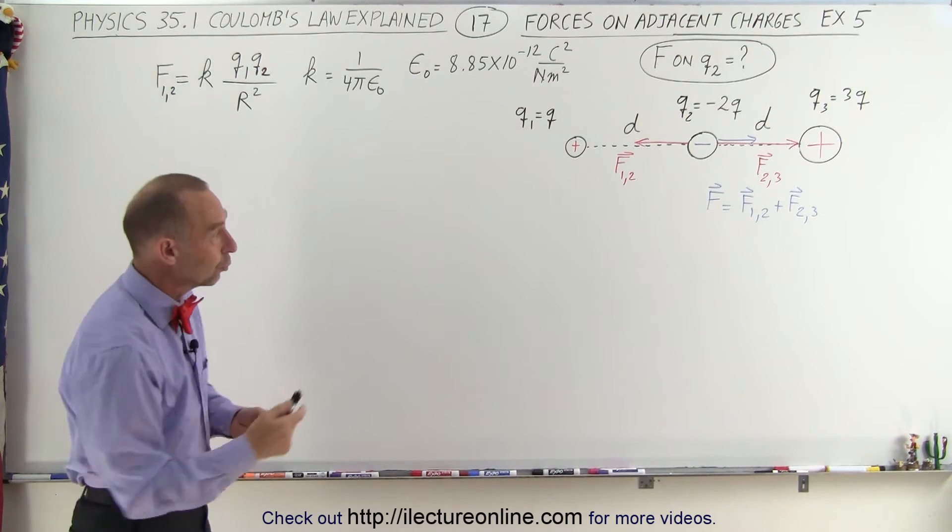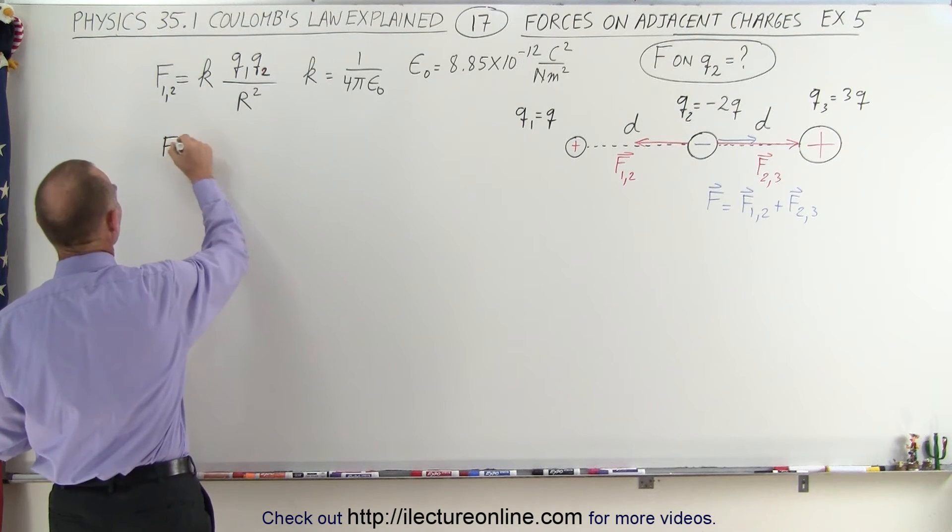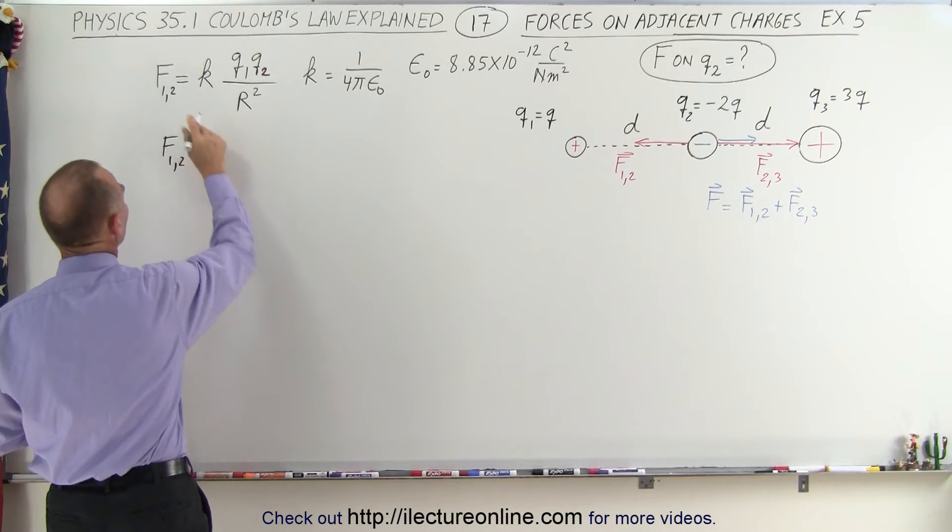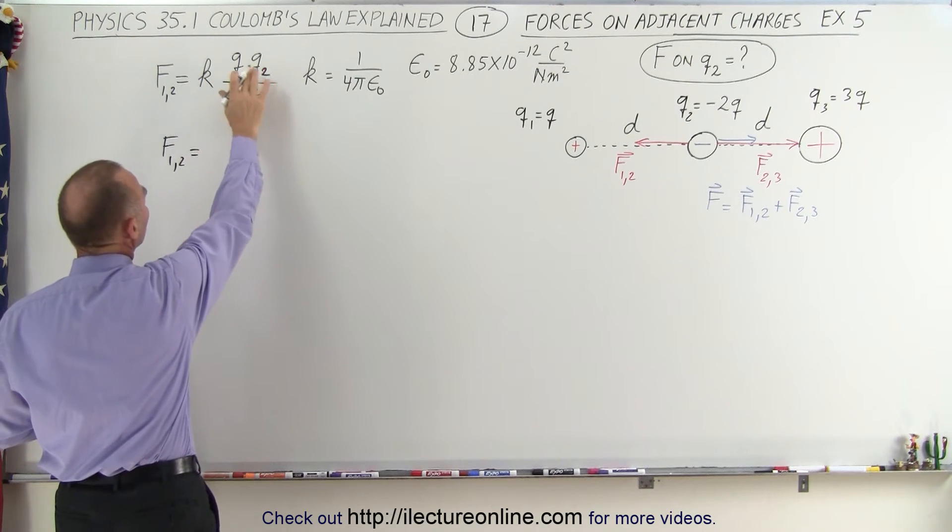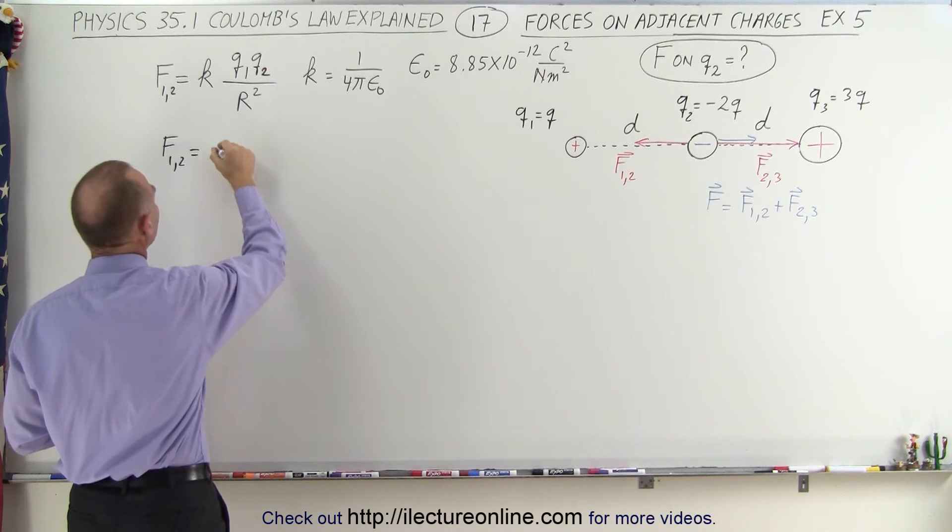Now, let's find the magnitude of those two forces, F1,2 and F2,3. F1,2, as we can see, is simply K times Q1 times Q2 divided by the distance between them squared. In this case that would be K times Q1, which is Q,